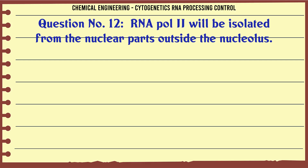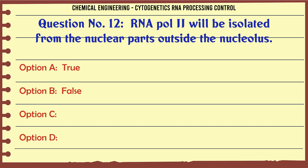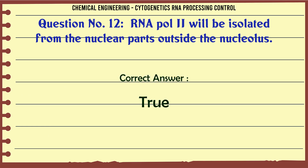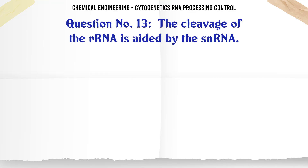RNA Pol II will be isolated from the nuclear parts outside the nucleolus. A. True, B. False. The correct answer is True.